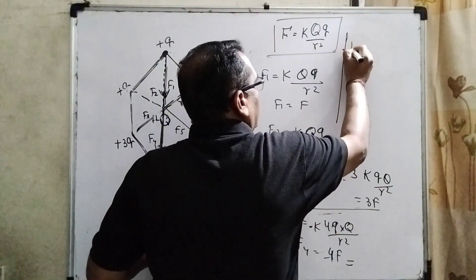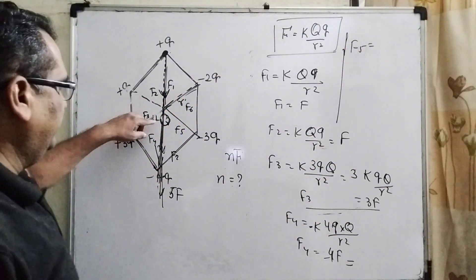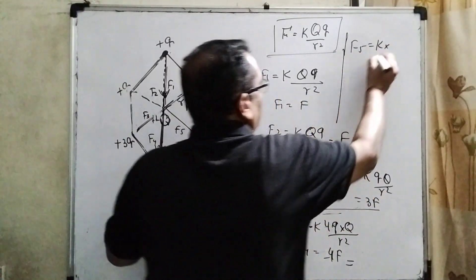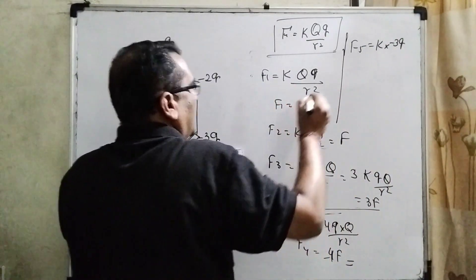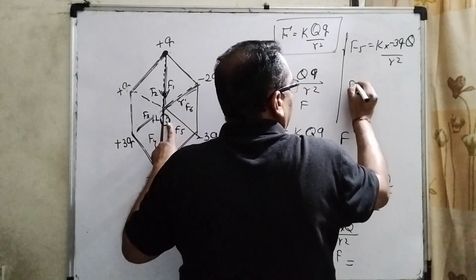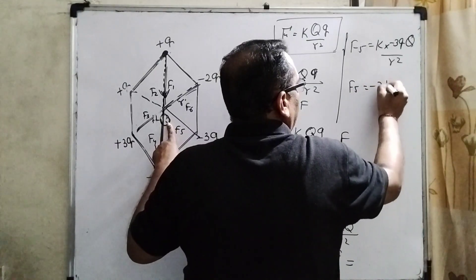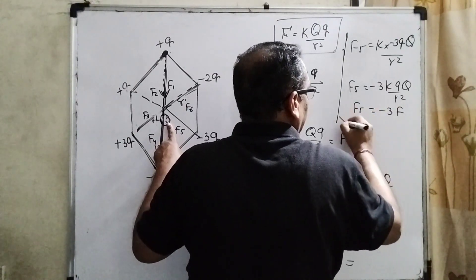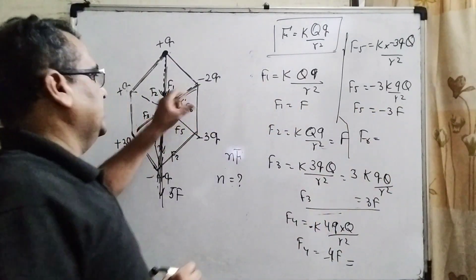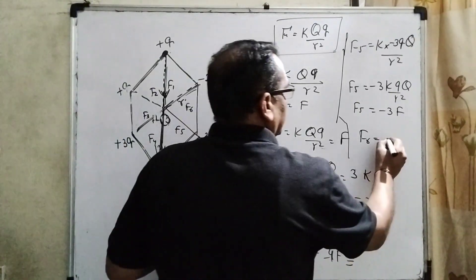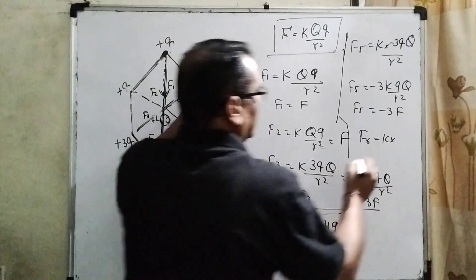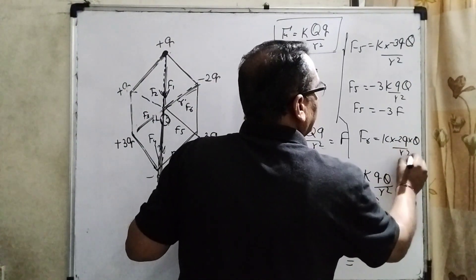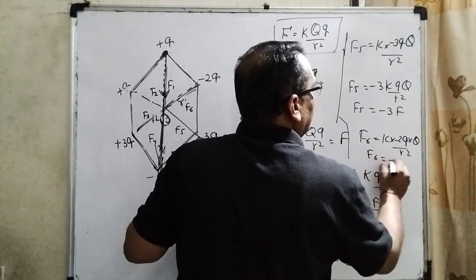Same things applying here F5. Then what is F5? k, what is the charge? Minus 3q. And central charge is capital Q upon r square. It means F5 equal to minus 3F. Same thing. And last F6, k, what is the charge? Minus 2q. Central charge capital Q upon r square. It means F6 equal to minus 2F.